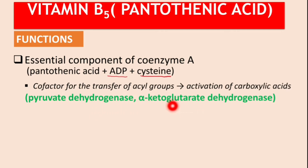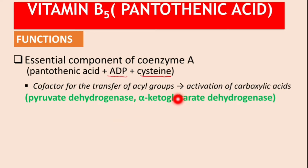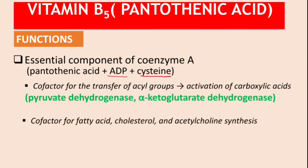Another enzyme similar to the pyruvate dehydrogenase complex is alpha-ketoglutarate dehydrogenase, found in the Krebs cycle. As you'll see in our nutrition and metabolism series, these two enzymes share quite similar cofactors — we call them the 'lovely cofactors.' Coenzyme A is also a cofactor for fatty acid synthesis, cholesterol synthesis, and acetylcholine synthesis, which we'll discuss in later videos.